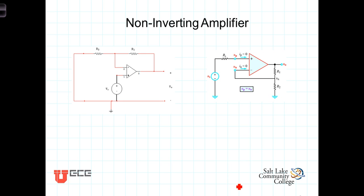The first of the op-amp configurations that we're going to consider is known as the non-inverting amplifier. It gets its name from the fact that the source voltage to be amplified is connected to the non-inverting terminal.